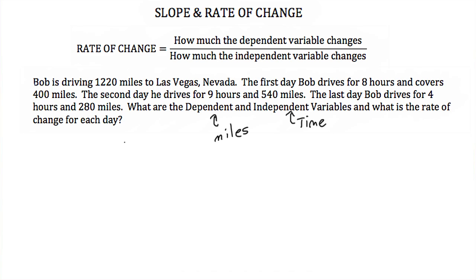Let's figure out the rate of change for each day. The first day, Bob drives 400 miles, which we set as our dependent variable and goes in the numerator. He does that in 8 hours, so that's our independent variable and goes in the denominator. If we divide 400 by 8, we find out that Bob has been driving 50 miles per hour.